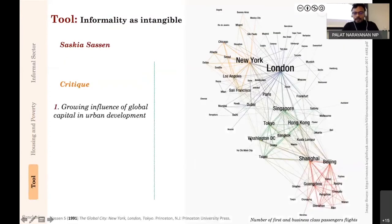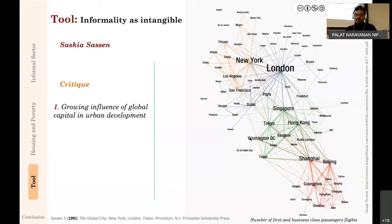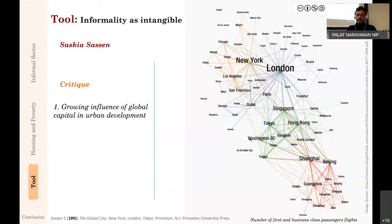Now let's move to the final third strand: informality as a tool. I'll start with Saskia Sassen's famous book The Global City. Her critique was that cities are linked through global capital flows, and the cities through which these capital flows move are 'global cities' because they are interlinked. Looking at a diagram of first- and business-class passengers, the cities with maximum flow are most important. Even within the same country, Washington, Los Angeles, and New York have different densities of flights—and New York, London, Singapore become much more important than Mumbai, Delhi, or Bangalore.